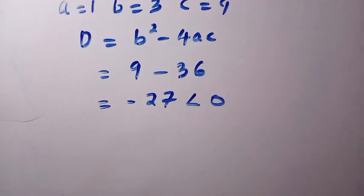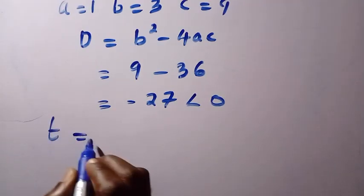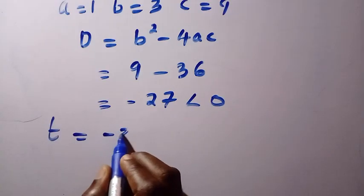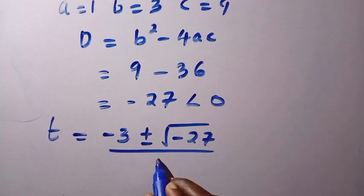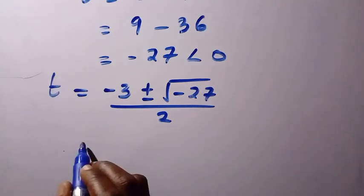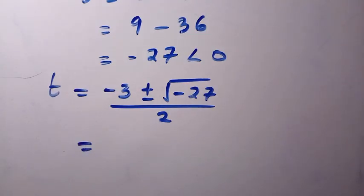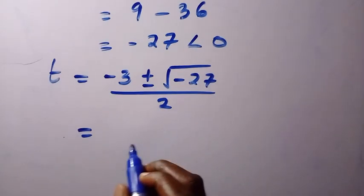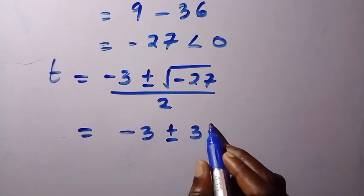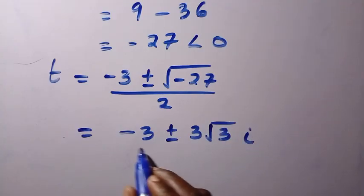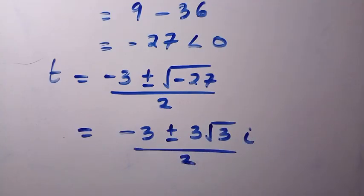Applying the quadratic formula, t equals minus b plus or minus the square root of the discriminant, divided by 2a. That gives us t equals minus 3 plus or minus the square root of minus 27, divided by 2. Since this is a complex solution, we get t equals minus 3 plus or minus 3 times the square root of 3 times i, all divided by 2.